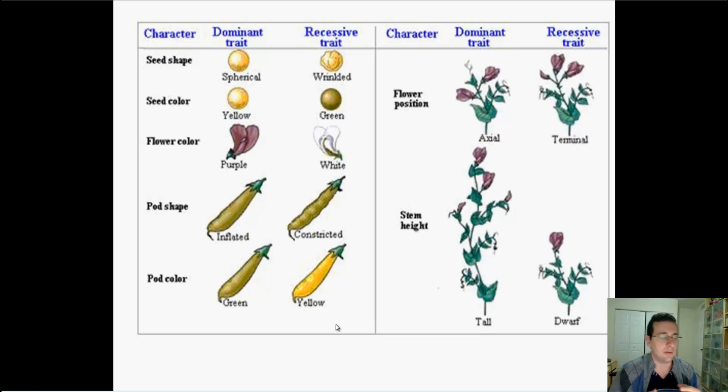The characters of pea plants are very simple. Either you have a spherical shape or a wrinkled-shaped pea. Either you have a yellow pea or you have a green pea. Either the flower is purple or the flower is white. Either the pod looks inflated or it looks constricted. It's either green or yellow. The flower is either on top or on the sides. The stem is either high or short. These distinctive seven traits is what he studied.